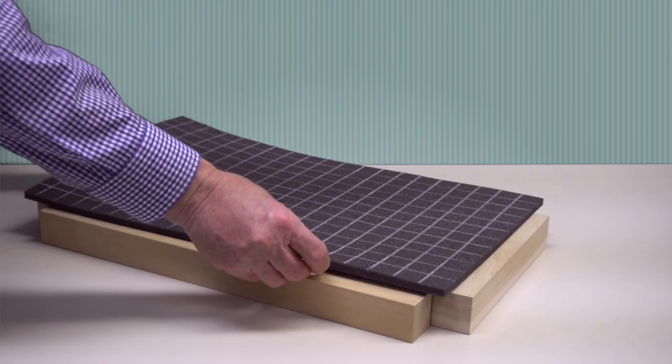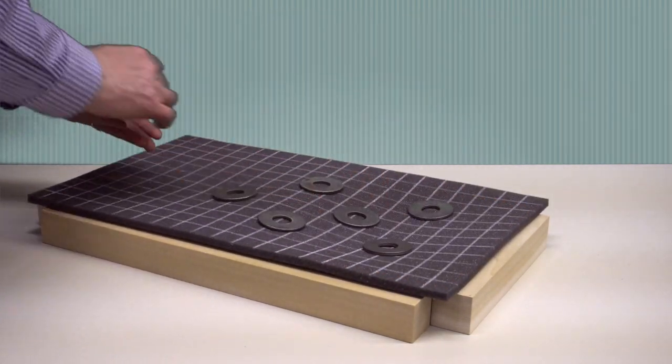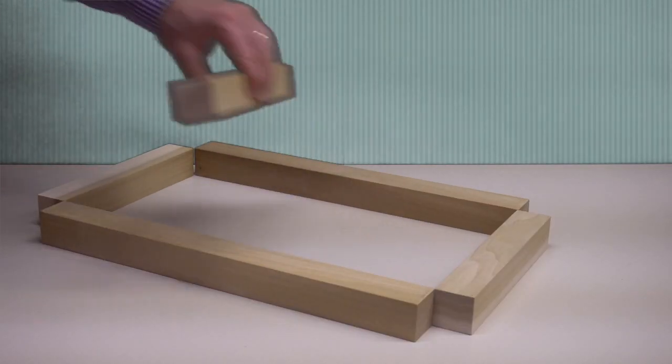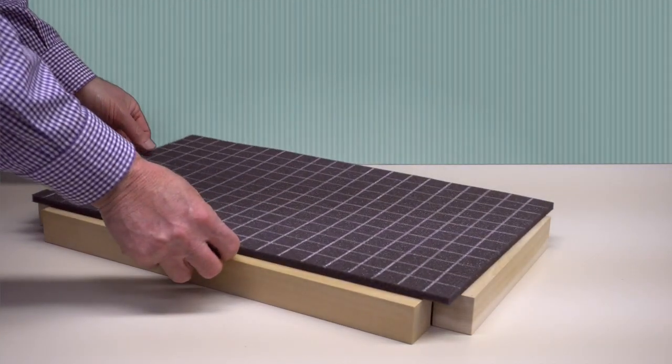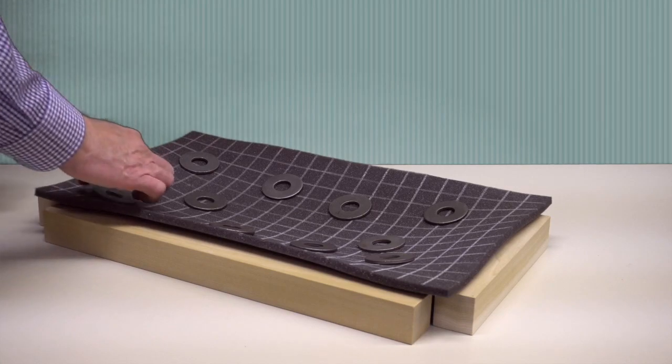A simply supported plate that spans two bays takes this shape, and it exhibits both positive and negative curvatures. If we remove the center support, we get a rectangular plate, and it takes this shape under load.